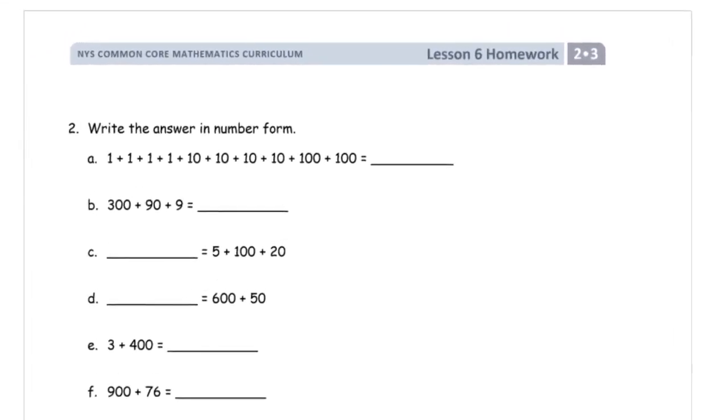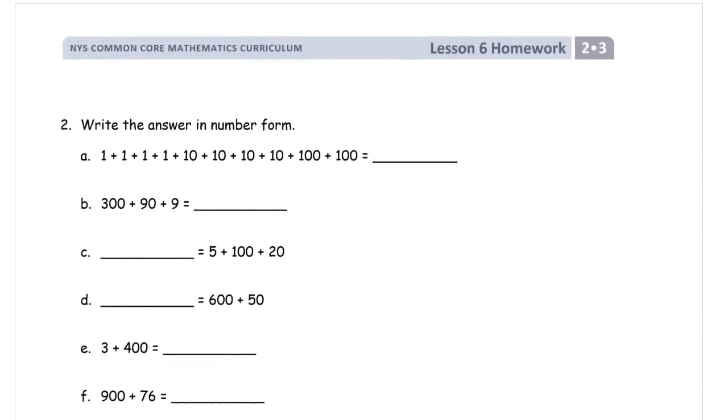We're writing numbers in expanded forms where we're adding the hundreds, the tens, and the ones. And we're writing these in number form, also called standard form. What is this? When you add these all together, what's the sum? Write it as a regular number.